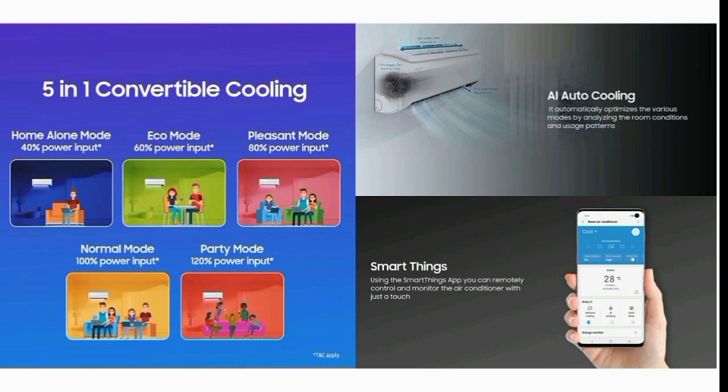The second option is e-com. If you choose the e-com option, you can choose two-zone cooling. With e-com, the AC runs at 60% and the remaining 40% is energy saving. The third option is present mode. You can choose the present mode where the AC runs at 80%, saving the remaining 20% power.